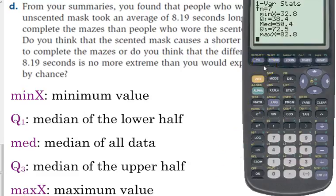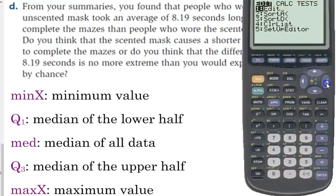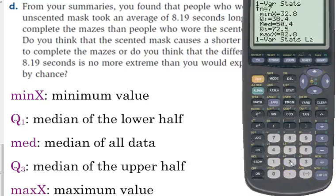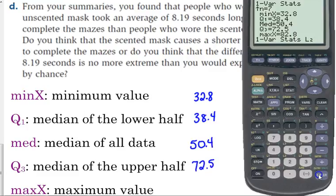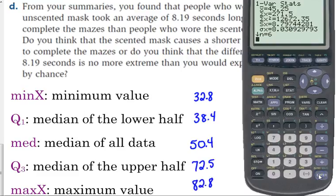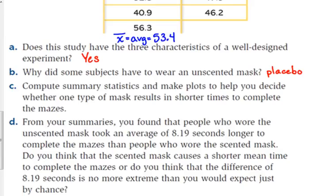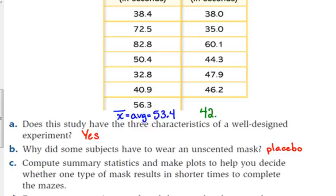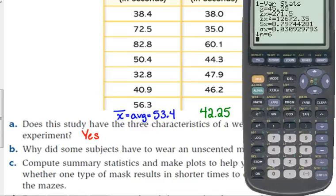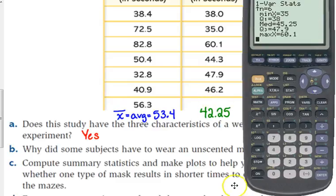And then once you get those written down, and it should be the same on your calculator as it is on my calculator, unless I type something in wrong or you type something in wrong. I want you to do the same thing, stat, go over to calc, one variable stats, but this time press second two so that it does the statistics on list two. Still write down the average as well. And then write down the five-number summary.